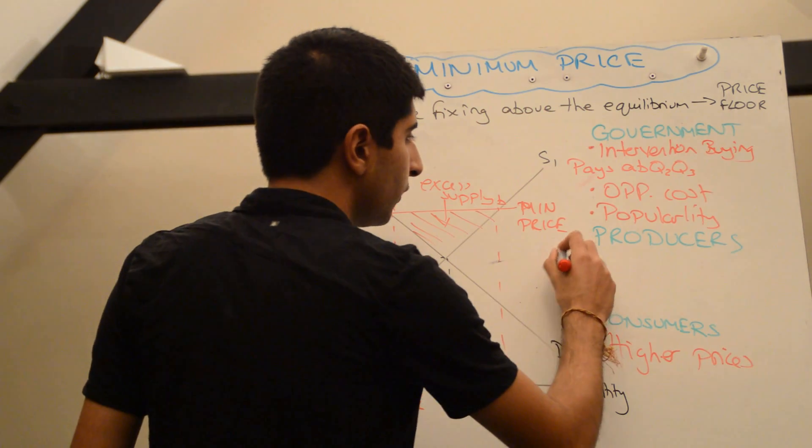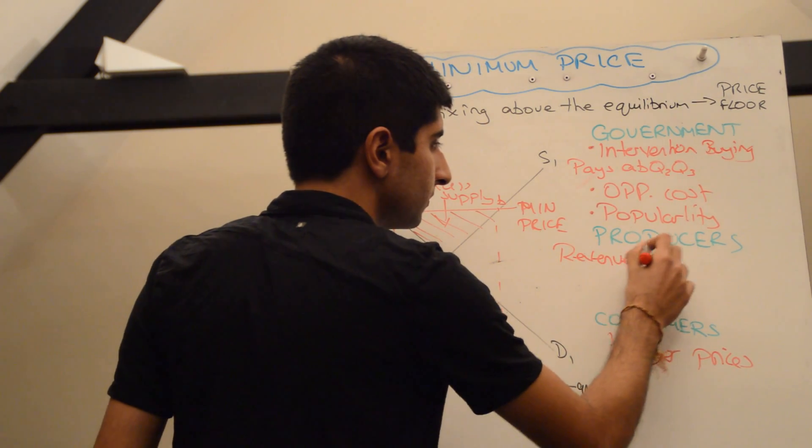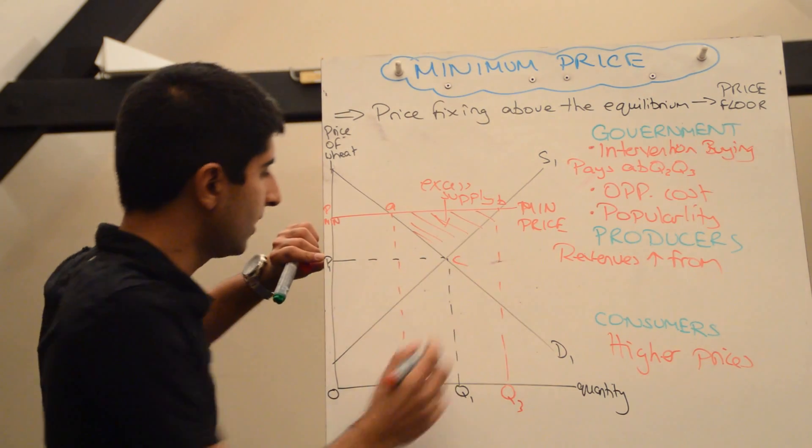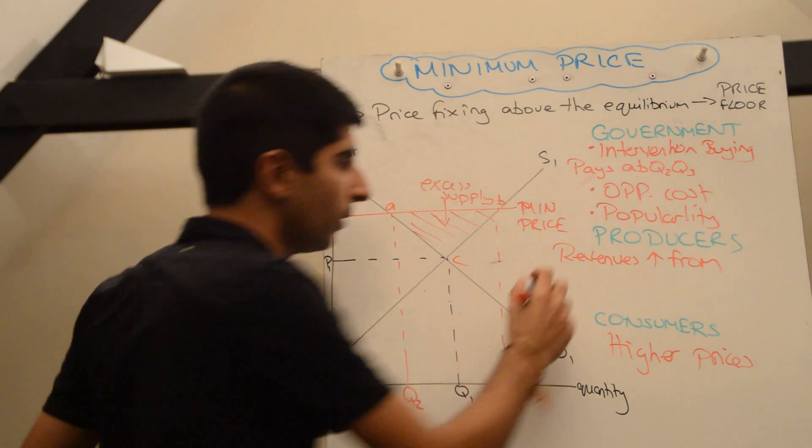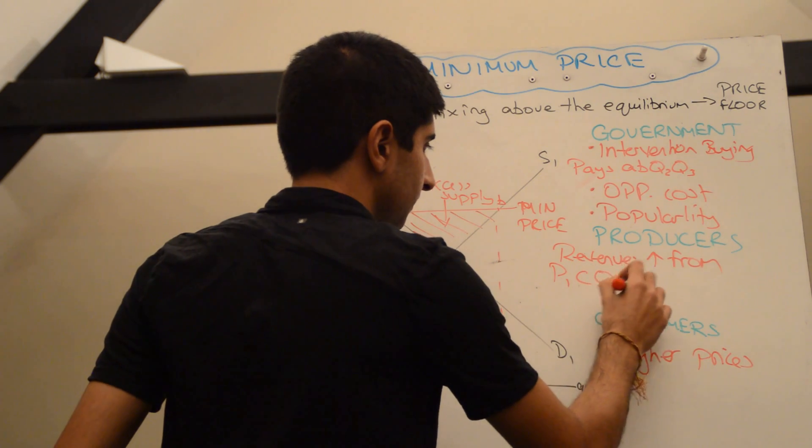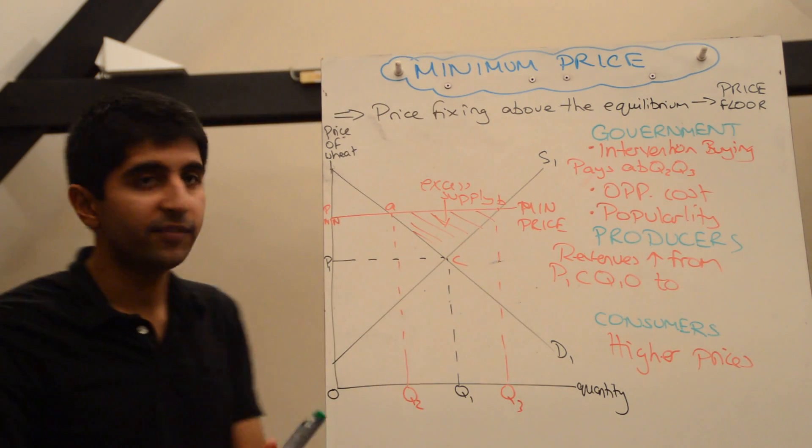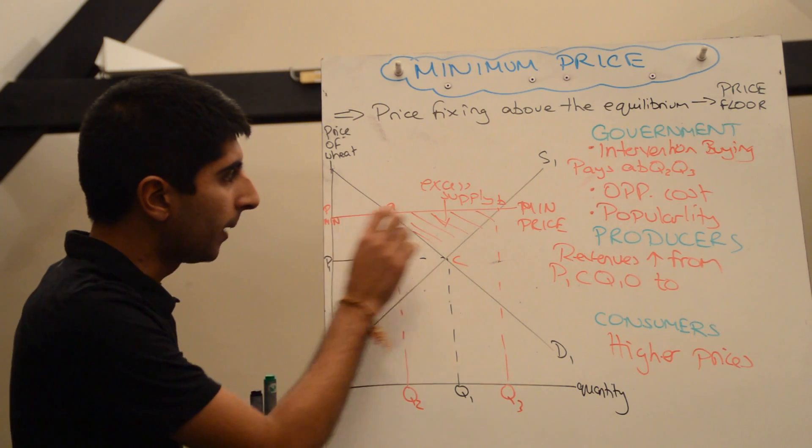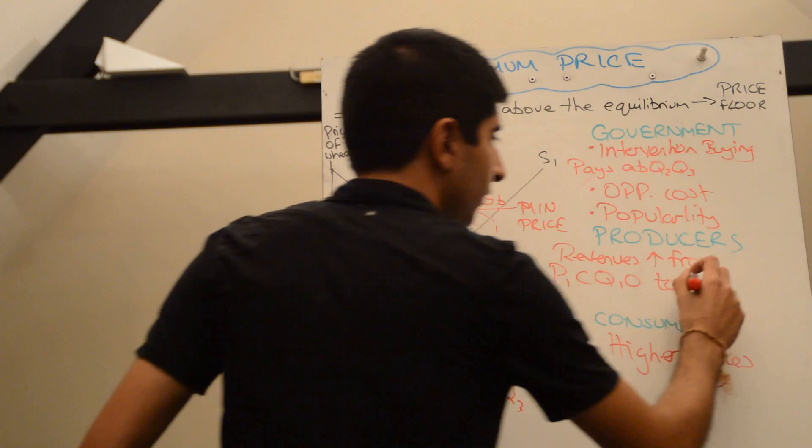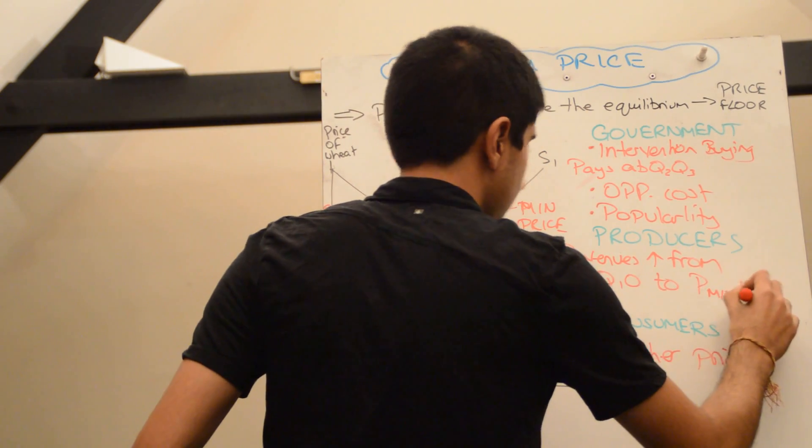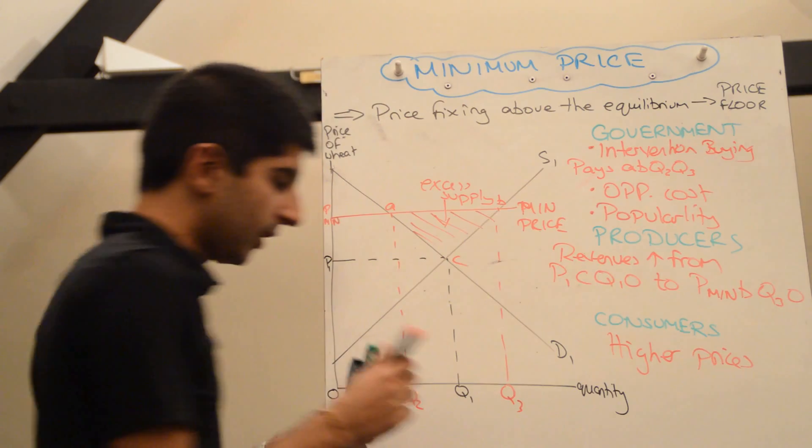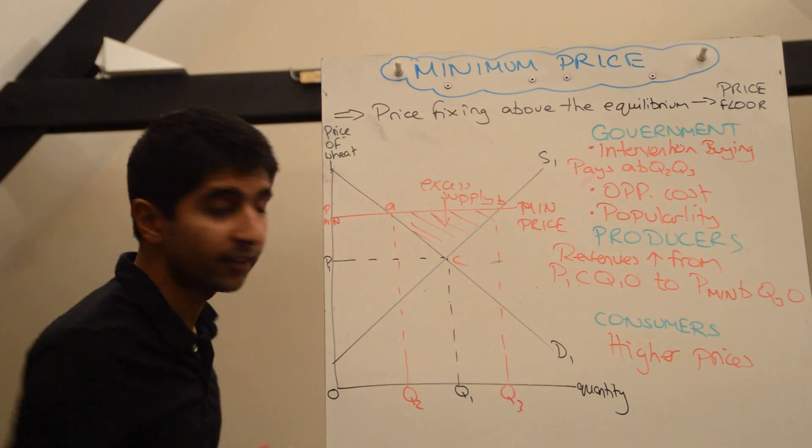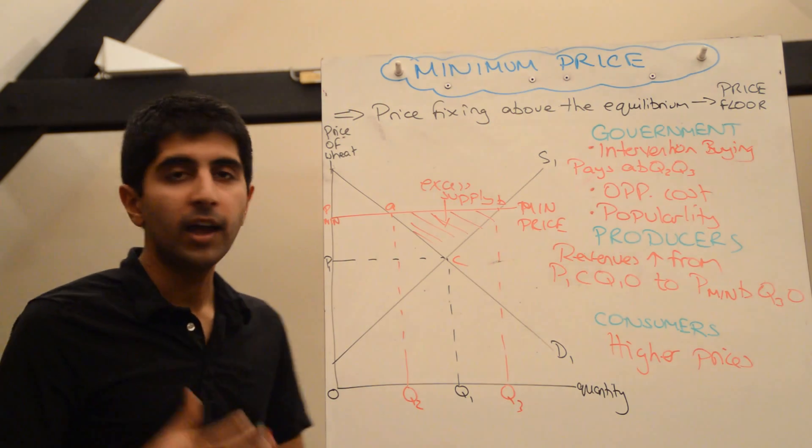Producers, though, will like it. So their revenues increase. From initially, they're earning P1, let's call that C, P1CQ10, to now, with the government intervening and buying up all this excess stock, they're actually getting PMIN, BQ3, 0. So their revenues have increased from this little box down here to now this huge extra box there. So producers are getting a great excess in revenue as a result of it.